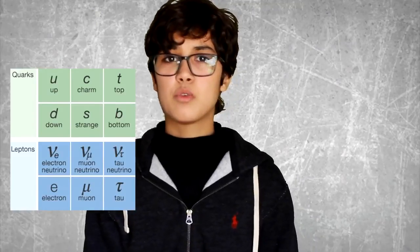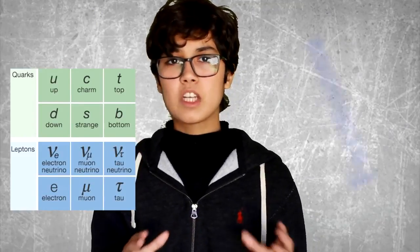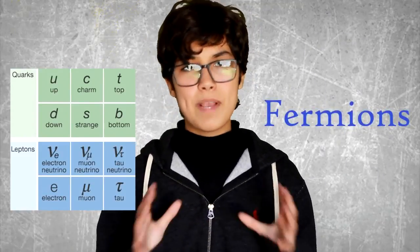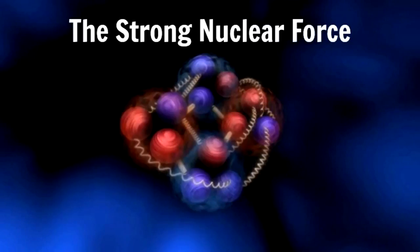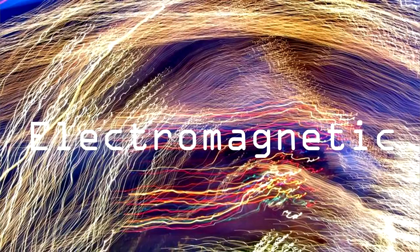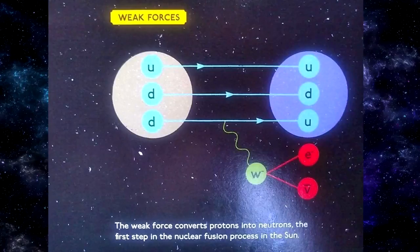Quarks and leptons belong to a greater family called fermions, and they're what makes up matter. Now for the forces that govern matter, let's go back to the gluons. These are one of four force carrier particles, and they're responsible for the strong nuclear force. And then there's photons for the electromagnetic force, and the Z and W bosons for the weak nuclear interactions.